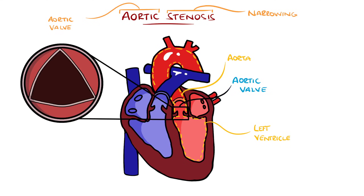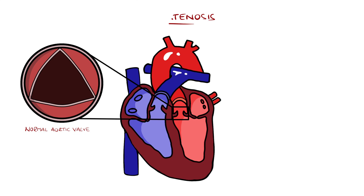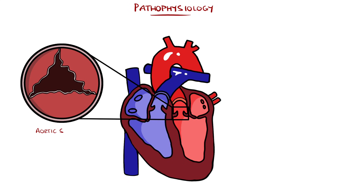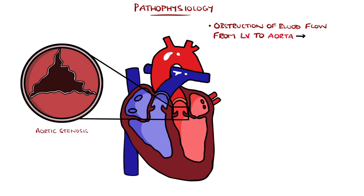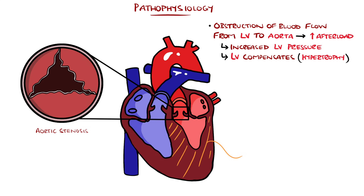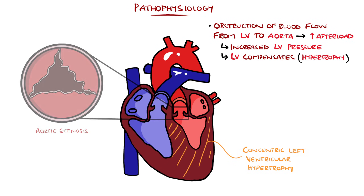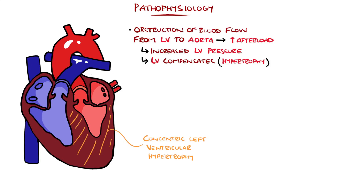Aortic stenosis is a narrowing of the aortic valve. The obstruction to blood flow between the left ventricle and aorta increases the afterload, which is the resistance against which the left ventricle must contract to pump blood around the body. This results in increased ventricular pressure, and to compensate, the left ventricle becomes concentrically hypertrophied, which is a problem because the ventricle becomes less compliant and does not stretch as well. The pressure at the end of diastole is therefore higher, eventually causing diastolic heart failure, which often features dyspnea — shortness of breath — especially during periods of increased demand such as exercise.